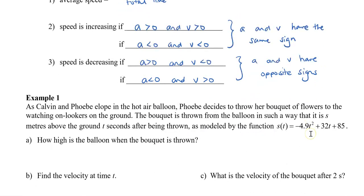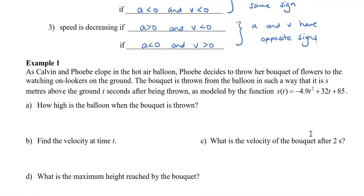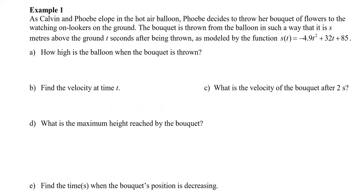Let's take a look at an example. As Calvin and Phoebe elope in the hot air balloon, Phoebe decides to throw her bouquet of flowers to the watching onlookers on the ground. The bouquet is thrown from the balloon such that it is s meters above the ground t seconds after being thrown, modeled by s of t equals negative 4.9t squared plus 32t plus 85. The first question is: how high is the balloon when the bouquet is thrown? When the bouquet is thrown, time is zero. Plugging in t equals zero gives us 85, so the balloon is 85 meters high.